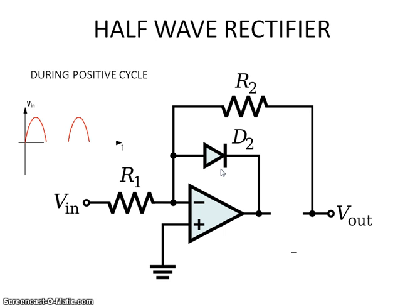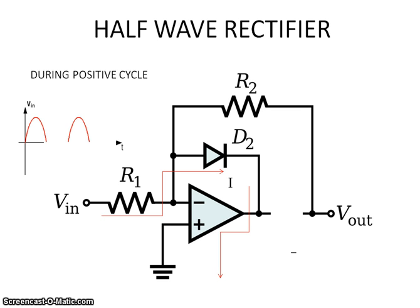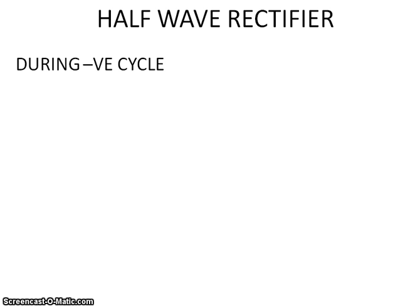Due to the minus V-sat output, D1 is off and D2 is on, providing a low-resistance feedback path. The current from V-in flows through R1 and D2 into the op-amp internally, which acts as a sink. There is no current flow through R2, and therefore there is no output voltage — the output is simply zero volts during the positive cycle.